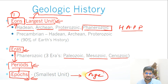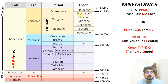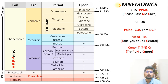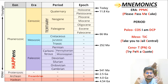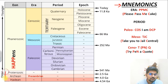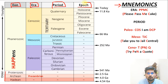The geological time scale table has a lot of information, so let's understand mnemonics — a method of training our brain to remember something in an easier, comprehensive format. The sequence from largest to smallest is eons, eras, periods and epochs. Using mnemonics we can remember this whole table more easily.